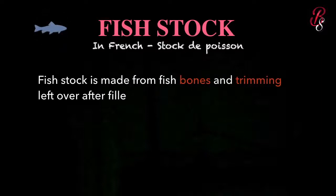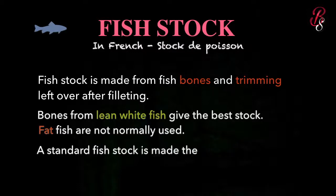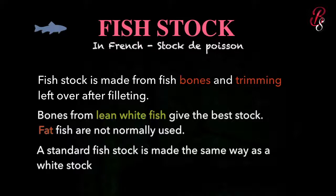Fish stock is made from fish bones and trimmings left over. The tip bones from lean white fish give the best stock. Fat fish are not normally used because we just need the fish bones, completely and perfectly trimmed — otherwise it will cloud the stock. Our standard fish stock is made the same way as the white stock.